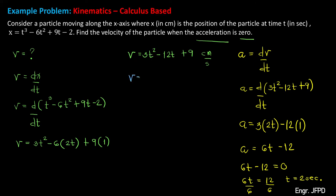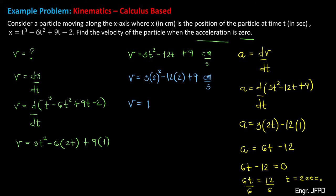The velocity v equals 3 times 2 squared, minus 12 times 2, plus 9, in centimeters per second. Simplifying: 3 times 4 is 12, minus 24, plus 9. Therefore, the velocity equals negative 3 centimeters per second. This is our final answer for the velocity when the acceleration is equal to zero.